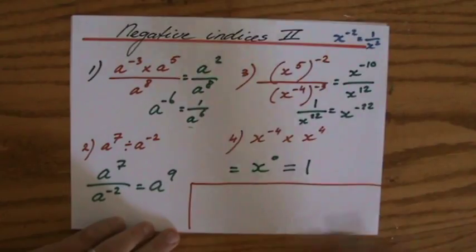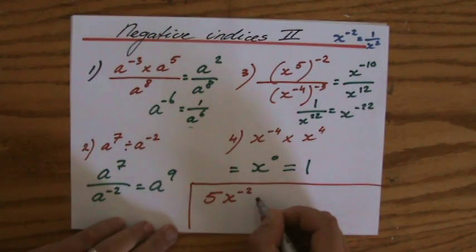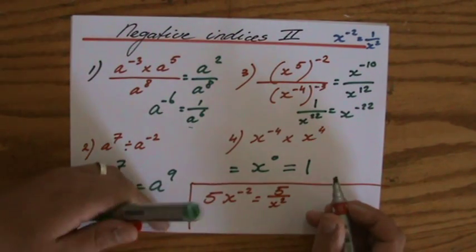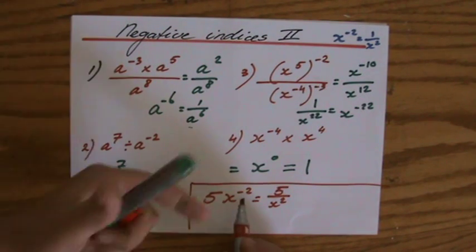Those were the four questions. I again want to emphasize the same thing I said in my previous video: that 5x to the power minus 2, that is 5 over x to the power 2, because the 5 has a positive index. It's the x with the negative index.